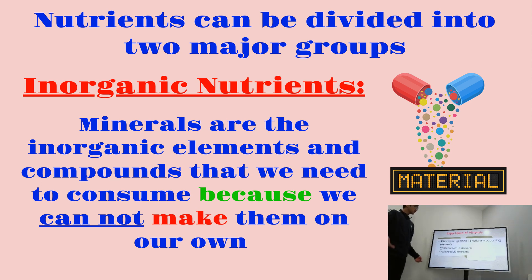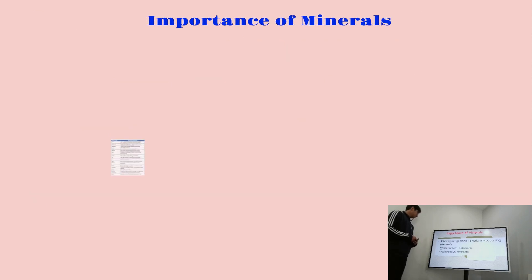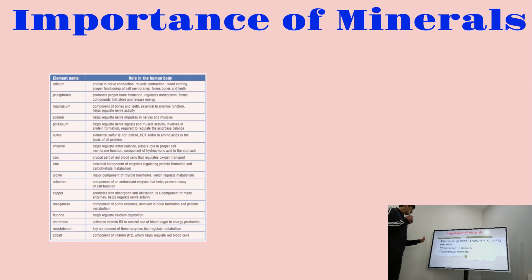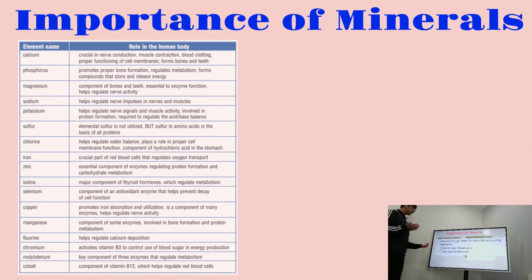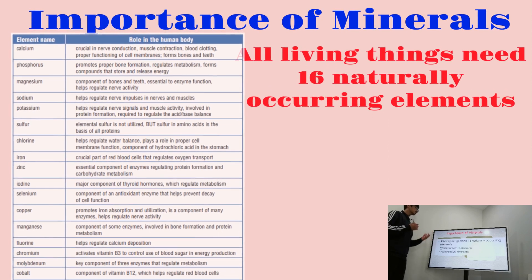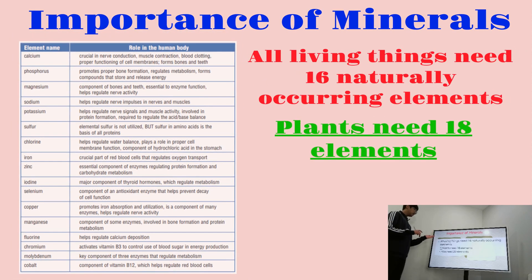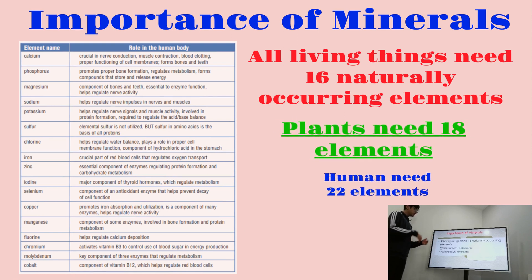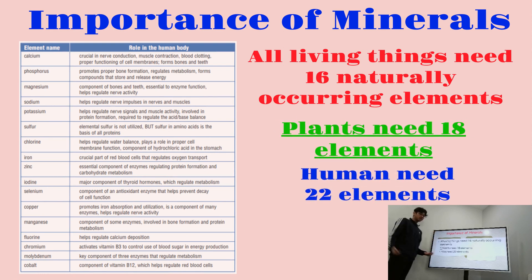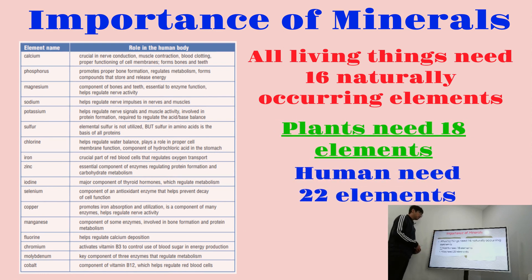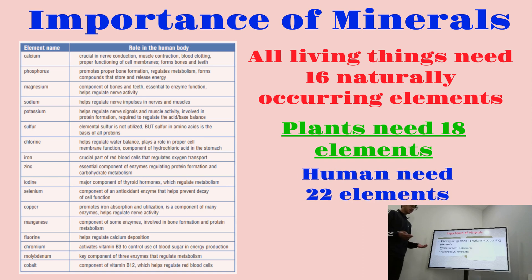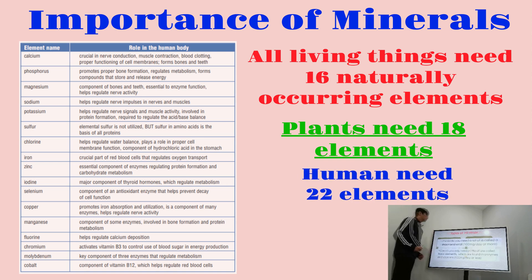What is the importance of minerals? All living things need at least 16 naturally occurring elements. Plants need at least 18 elements, and humans need at least 22 elements, showing how important minerals are and how many different varieties our bodies require.